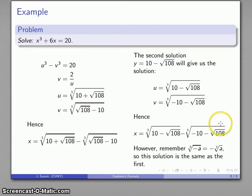However, remember that the cube root of a negative quantity is the same as negative the cube root of the quantity. So it turns out these two solutions are the same. This second term here is really plus cube root 10 plus 108 minus root 108 minus 10 cube root. So this solution here works out to be exactly the same as this solution here. So there's actually not two distinct solutions here. There's just the one solution.